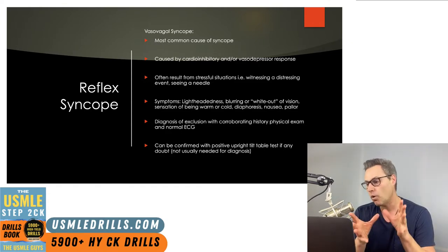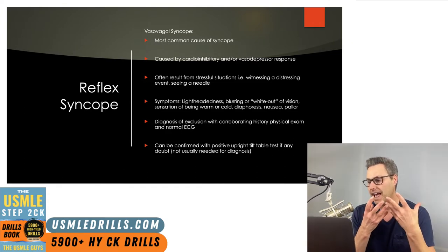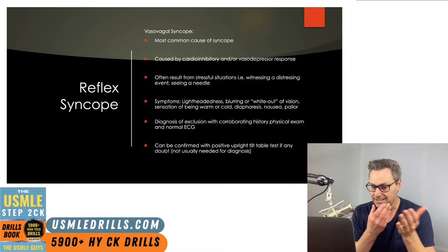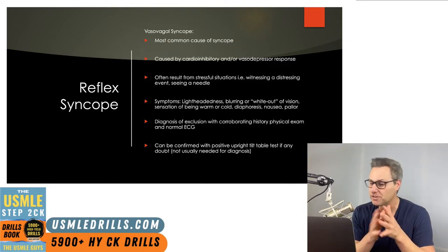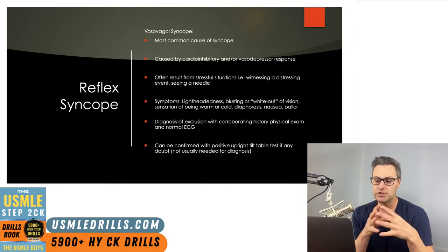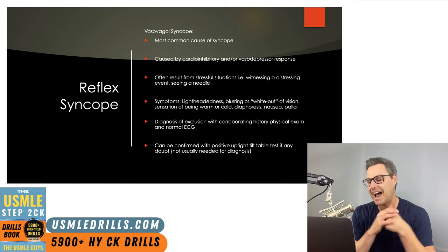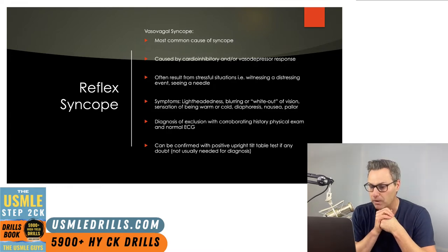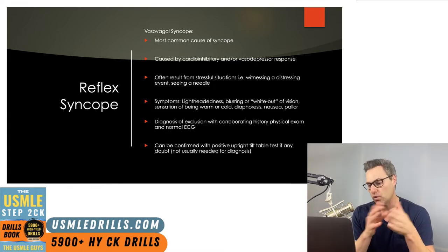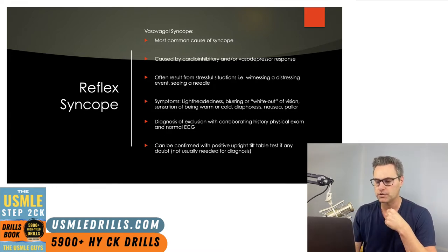Vasovagal syncope can also result from the dilation of blood vessels from decreased sympathetic activation, which leads to pooling of blood in the veins. This prevents adequate perfusion of the brain and, of course, also results in syncope.